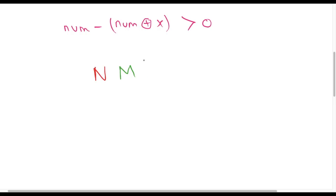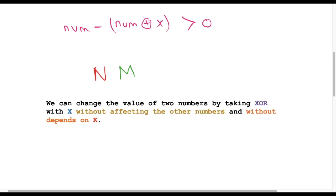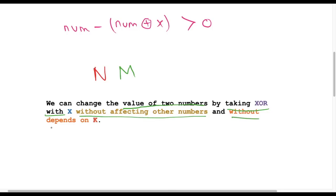Now let's claim a statement: we can change the value of any two numbers by taking the XOR with X, without affecting the other numbers and without depending on K.